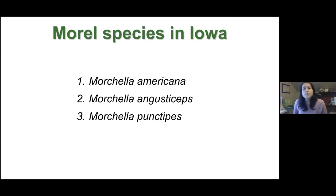The species of morels we have in Iowa, and most likely in Nebraska, are Morchella americana, Morchella angustisipis, and Morchella puncipes. We're going to go through each of them so that you become familiar with them.